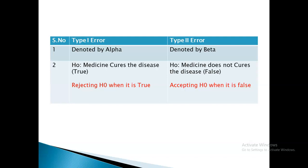For example, if the null hypothesis is 'medicine cures the disease' — that is true — and if this true null hypothesis is rejected, then it is said to be Type 1 error. As well as, in Type 2 error, the null hypothesis 'medicine does not cure the disease' is false, but when we accept this null hypothesis when it is false, then it is said to be Type 2 error.